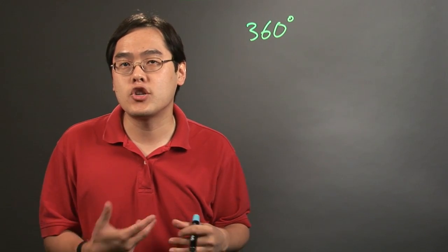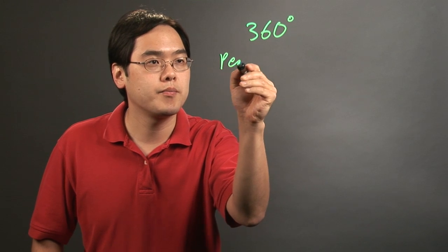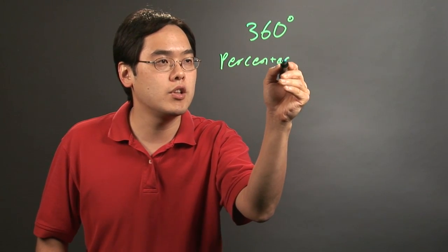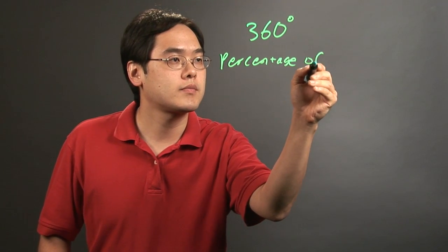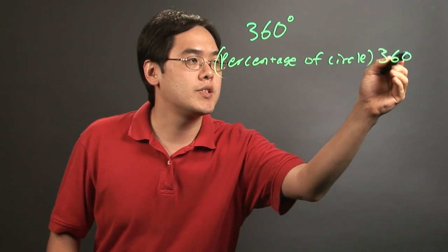So to find out the measure of the central angle here and rounding to the nearest whole number, what you want to think about is take the percentage of the circle that you're looking for and then simply multiply by 360.